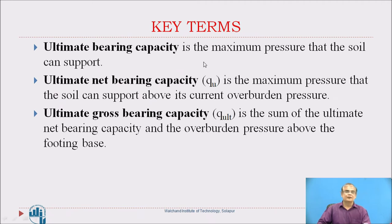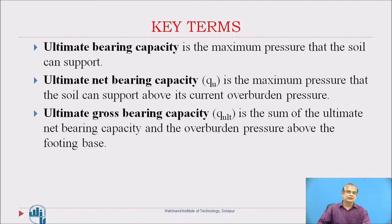Let us see some key terms. Ultimate bearing capacity is the maximum pressure that the soil can support. Ultimate net bearing capacity (Qu) is the maximum pressure that the soil can support above its current overburden pressure — overburden pressure is not considered here. Ultimate gross bearing capacity (Qu) is the sum of ultimate net bearing capacity plus the overburden pressure above the footing base.